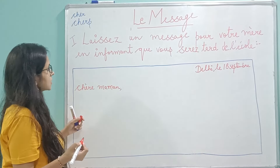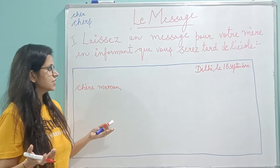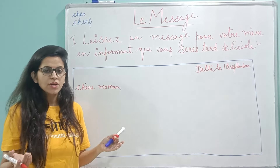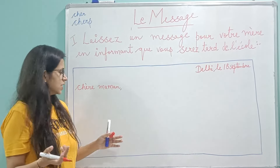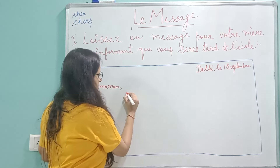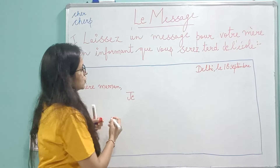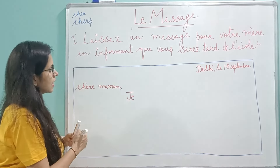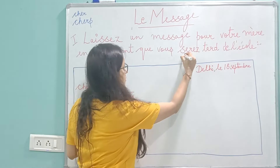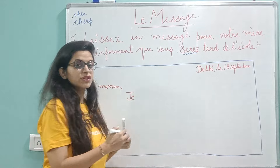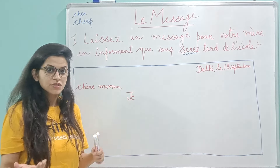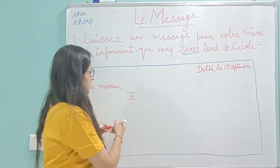Now we start writing the message. We need to write a message telling our mother that we will be late from school. You can begin with 'je'. First, figure out the tense of the message — the tense here is 'futur simple', meaning 'you will be', so you take that same tense.